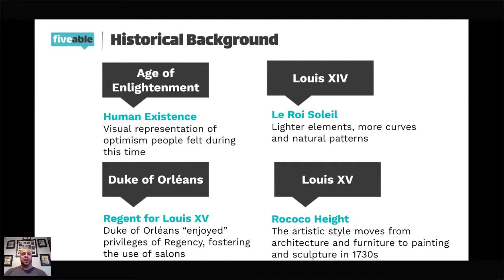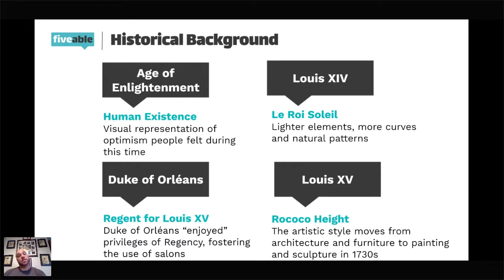During Louis XV's timeframe, we see a move from architecture and furniture — very utilitarian — to painting and sculptures, and even some music and fashion. Just remember: Baroque art is very heavy and very dark sometimes, while Rococo art is very light and fluid — it's meant to show change and optimism.